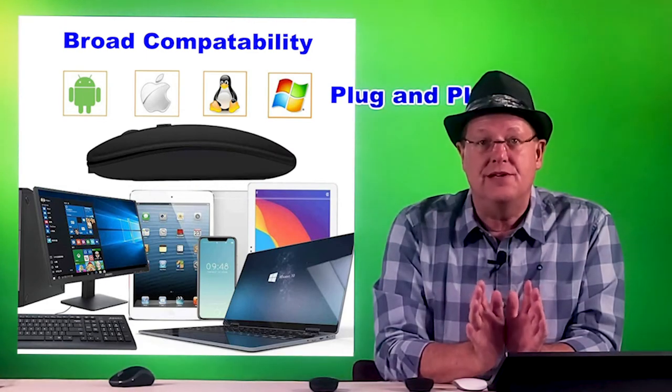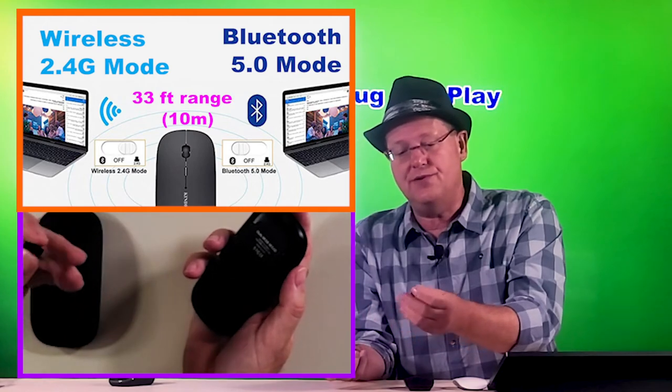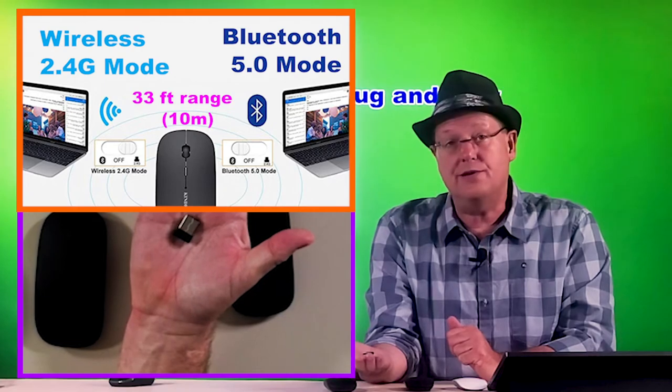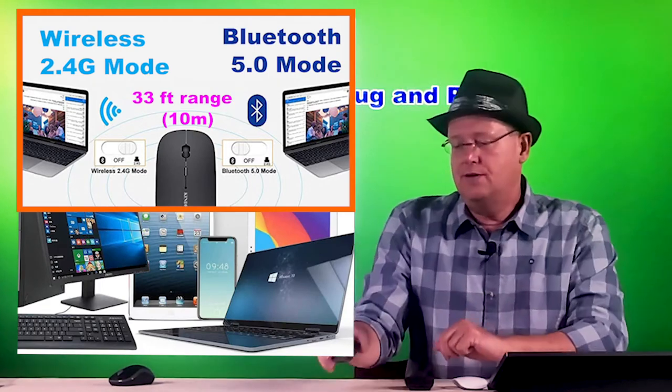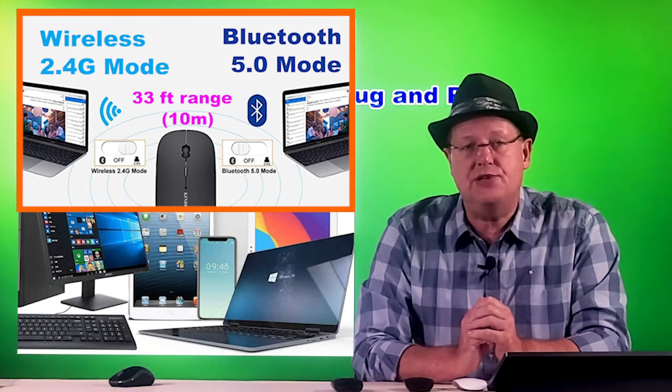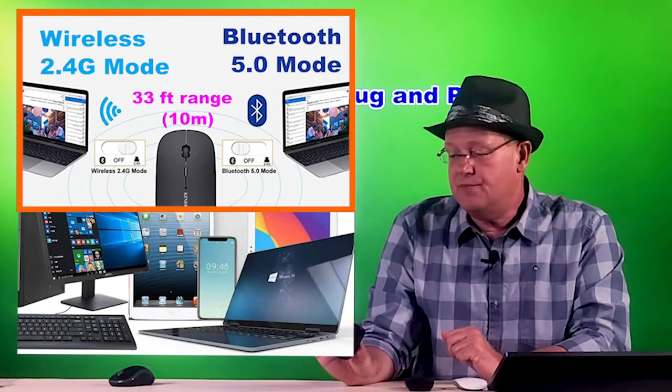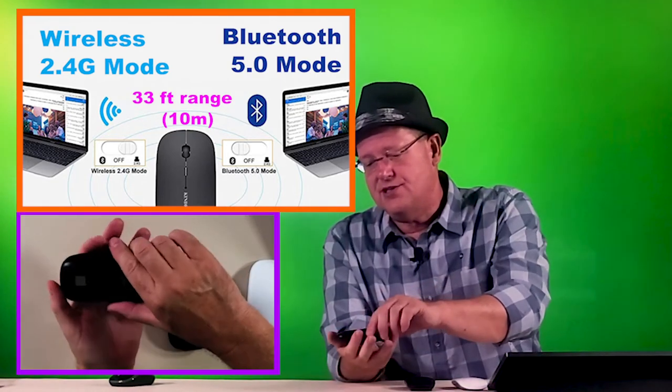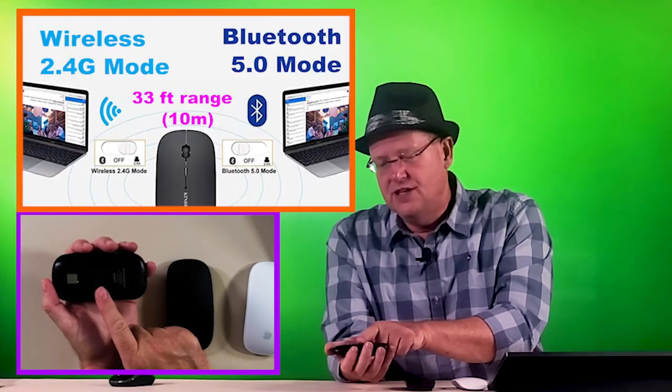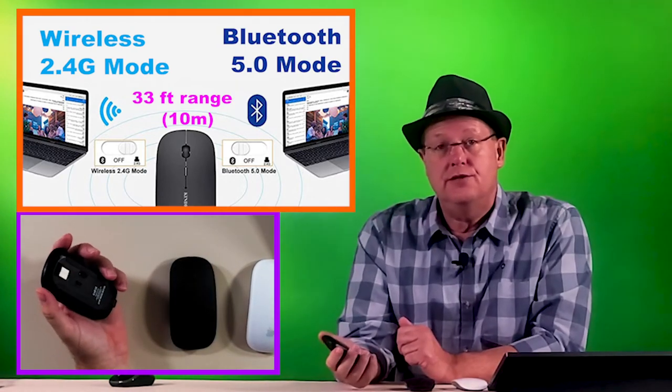What I love about this mouse is you can use it with the wireless 2.4 gigahertz dongle that plugs into your USB on your laptop or computer, so you can use it wirelessly, or it has built-in 5.0 Bluetooth if you're using it with a tablet. In my case, if you're a Samsung user with DeX and you turn your Samsung phone into a mini computer, it's very nice to have the Bluetooth compatibility. You change between the two modes by the on/off switch here on the bottom. Center is off, one way is Bluetooth, the other way is wireless.